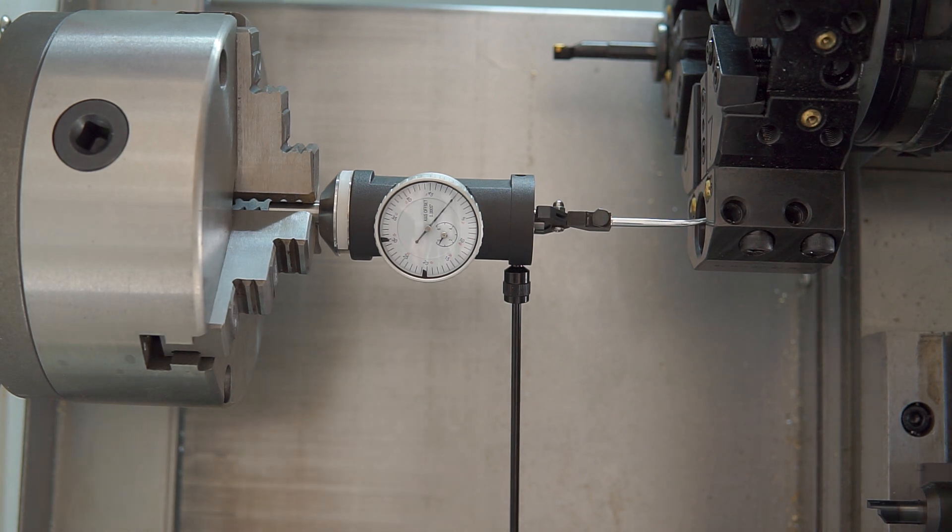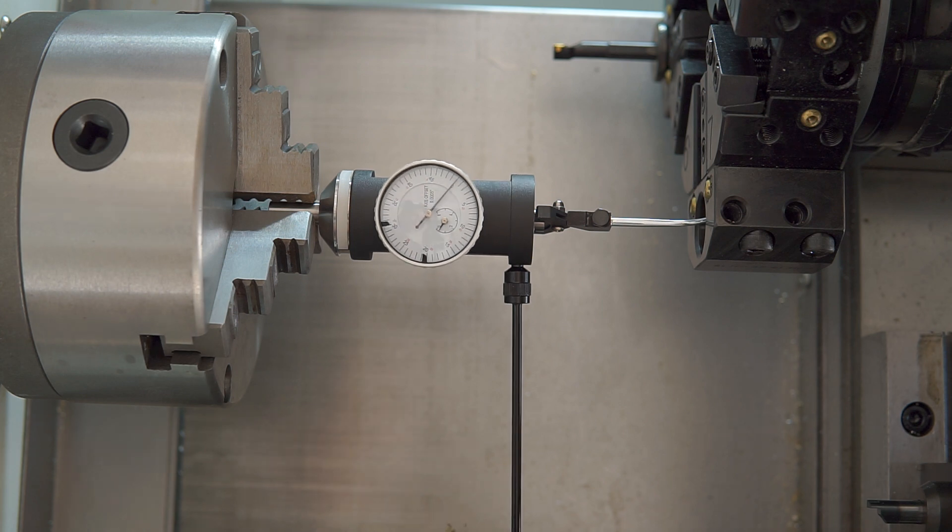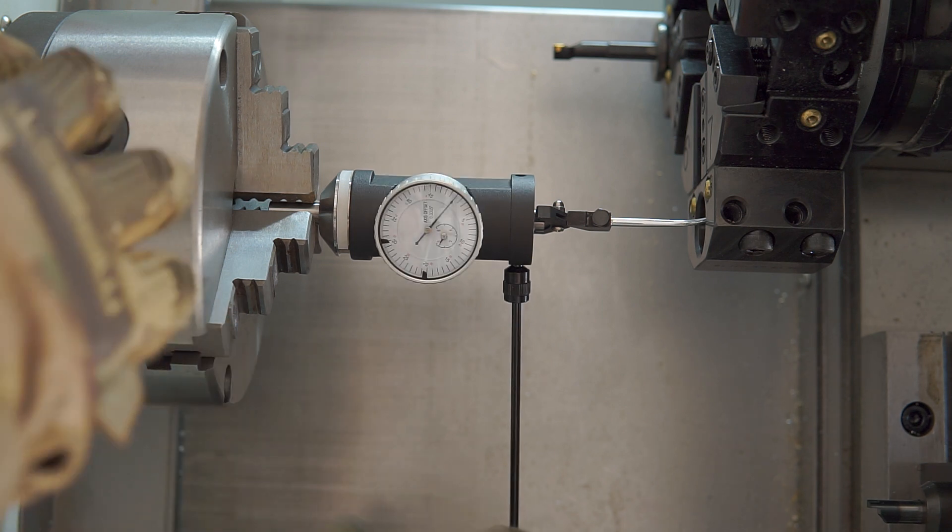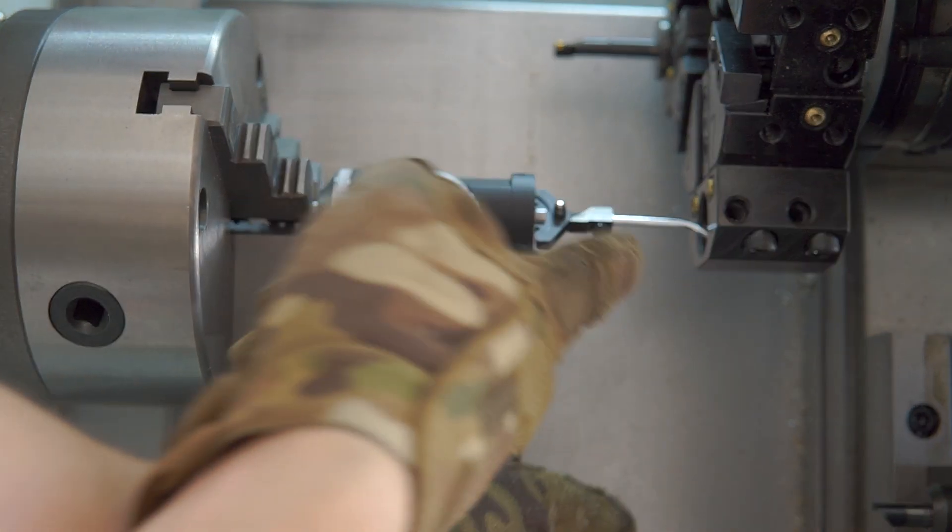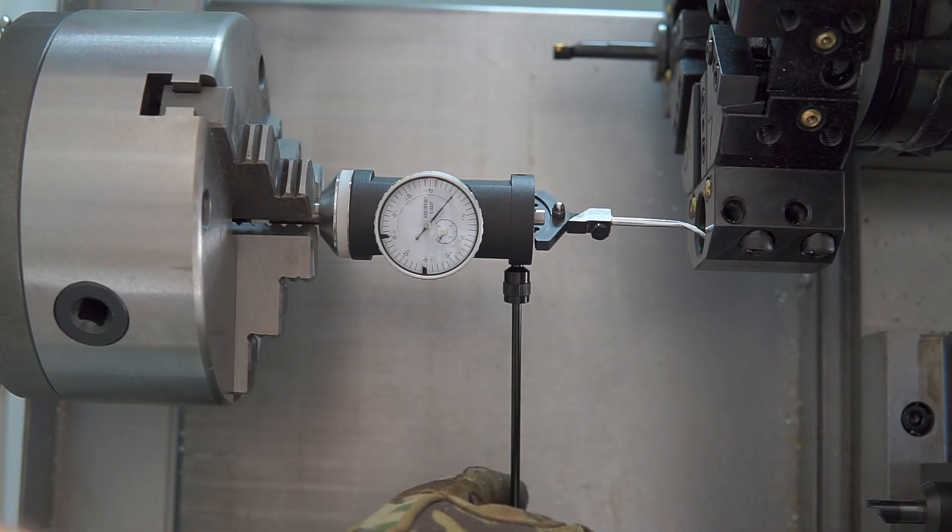Here we have the lathe and turret, and I have what's called a coaxial indicator which helps me measure the centerline. You can move the spindle around and this little probe at the end will tell you if you're in the center or not.